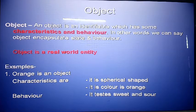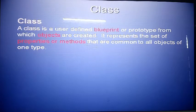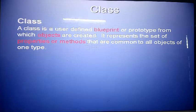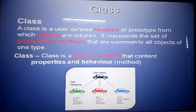A class is a user-defined blueprint or prototype from which objects are created. You can say a class is a collection of objects — many objects can be created from a class. It represents a set of properties and methods: properties means data types and methods means functions. The second definition: a class is a group of objects that share common properties and behavior. For example, a car can have different colors — green, red, blue — and those are the objects.